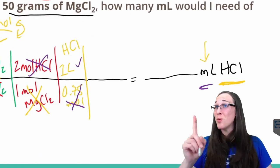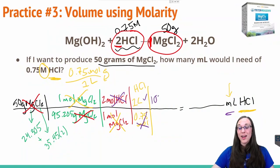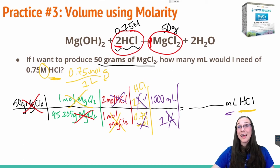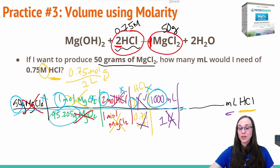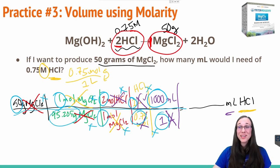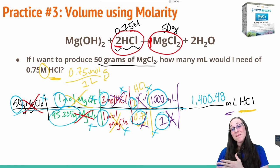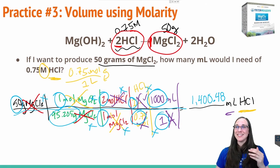I still need to get to milliliters — one more step. We know there are 1000 milliliters in one liter. Now I'm finally left with the correct units and the liters cancel. We take 50 × 1 × 2 × 1 × 1000, divided by 95.205 × 1 × 0.75 × 1, for a final answer of 1,400.48 milliliters of HCl. So if you had 1,400.48 milliliters of 0.75 molar HCl plus magnesium hydroxide, you could hypothetically produce 50 grams of magnesium chloride.